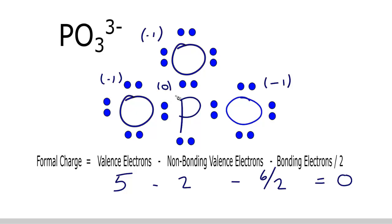We've calculated the formal charges for the PO3 3-minus ion, the phosphite ion. If you add all the formal charges up for each of the atoms, you'll see that you have negative 1 plus negative 1 plus negative 1 plus 0, which gives you negative 3. That makes sense because we have a total charge of negative 3 on the ion. So those are the formal charges for PO3 3-minus. This is Dr. B — thanks for watching.